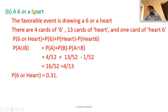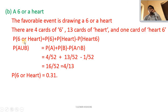Part B — a 6 or a heart: there are 4 cards of 6, 13 cards of heart, and 1 card that is both (heart 6). Using P(A union B) = P(A) + P(B) − P(A intersection B): that is 4/52 + 13/52 − 1/52 = 16/52 = 4/13, so probability of 6 or heart equals 0.31.